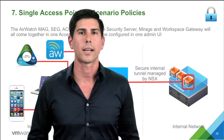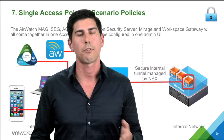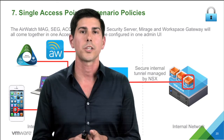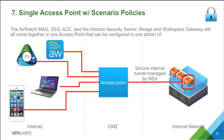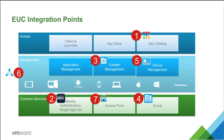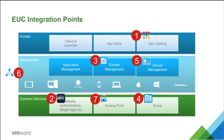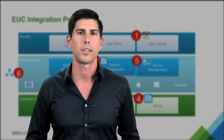Finally, on network access control — across all our products we have multiple ways of managing network access, and the opportunity is to consolidate that to a single place where IT can set network access policies enforced consistently across all devices. This technology will integrate seamlessly with network edge devices a customer already has, such as those from F5. Together, all these integrations create powerful potential to simplify and unify end user computing, and we can't wait to bring these innovations to you.